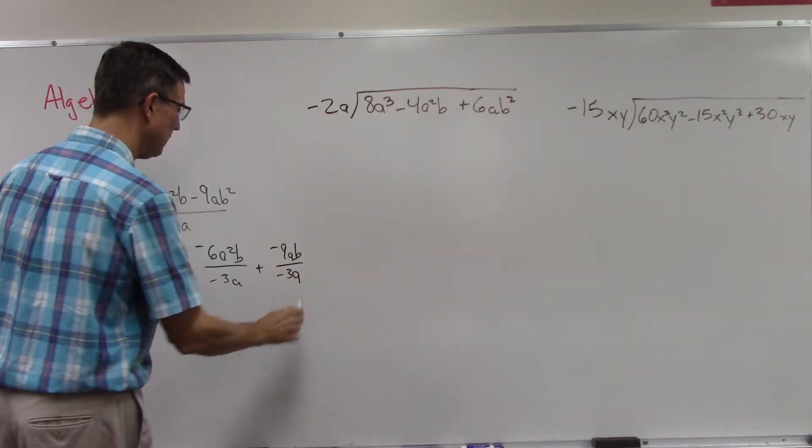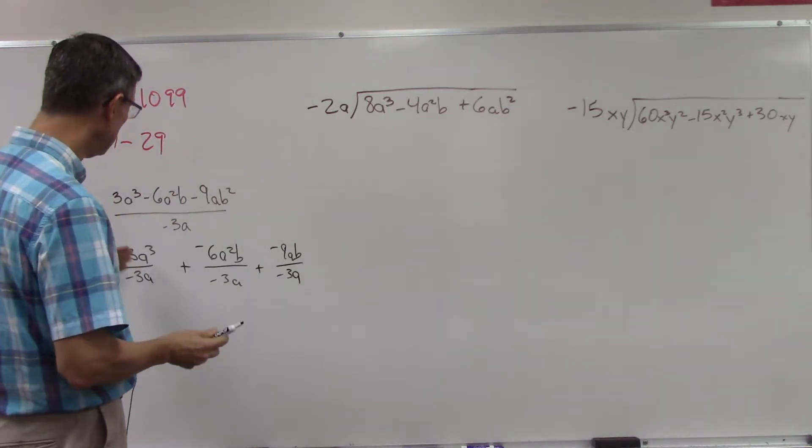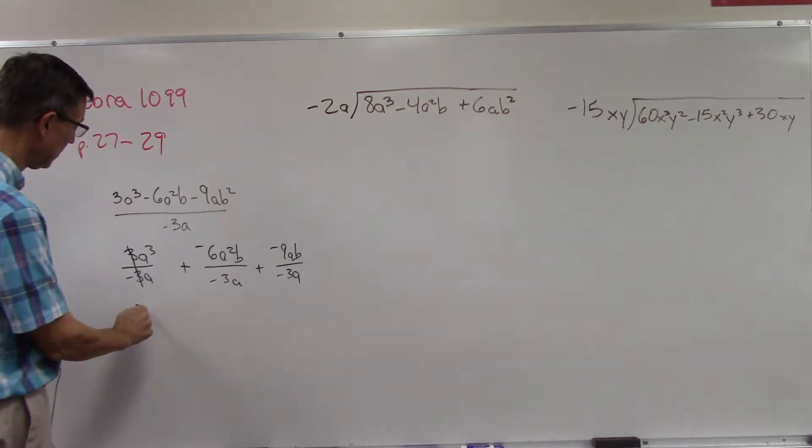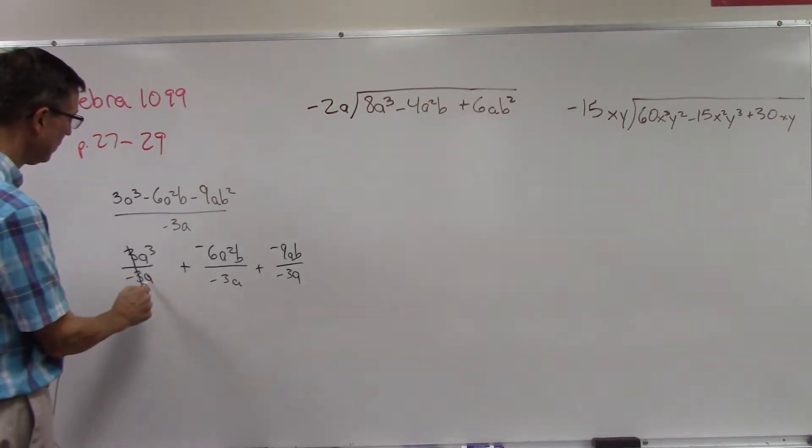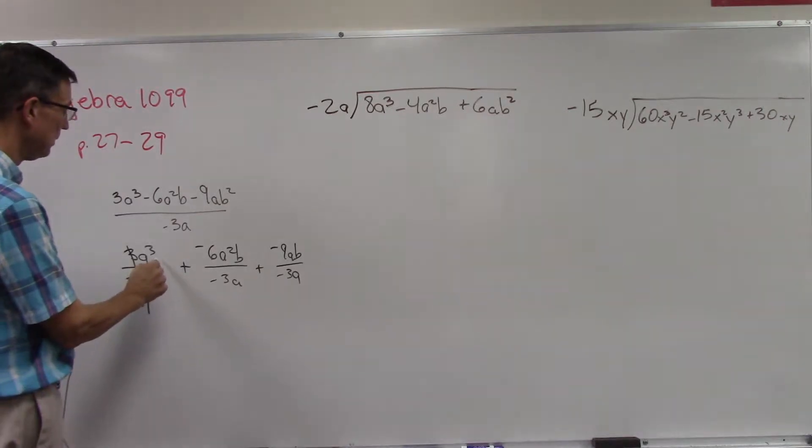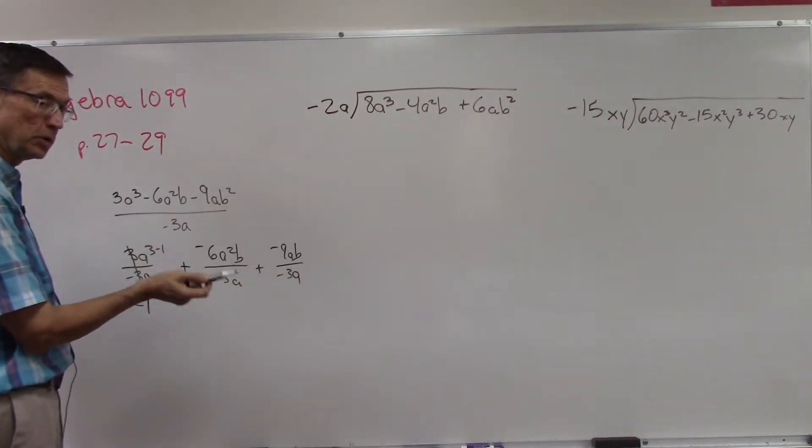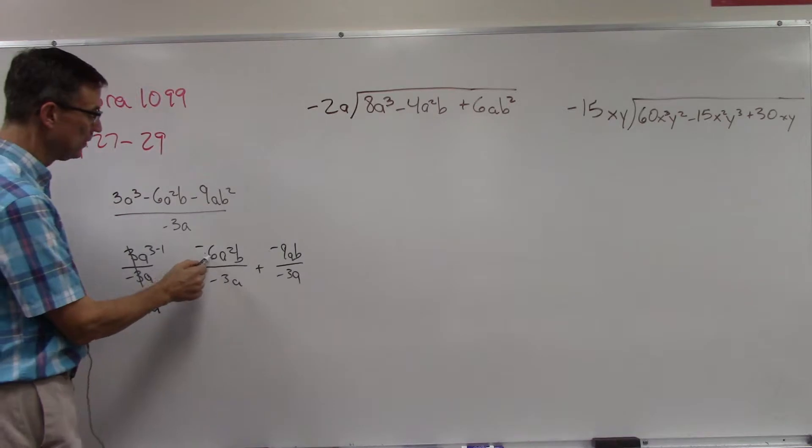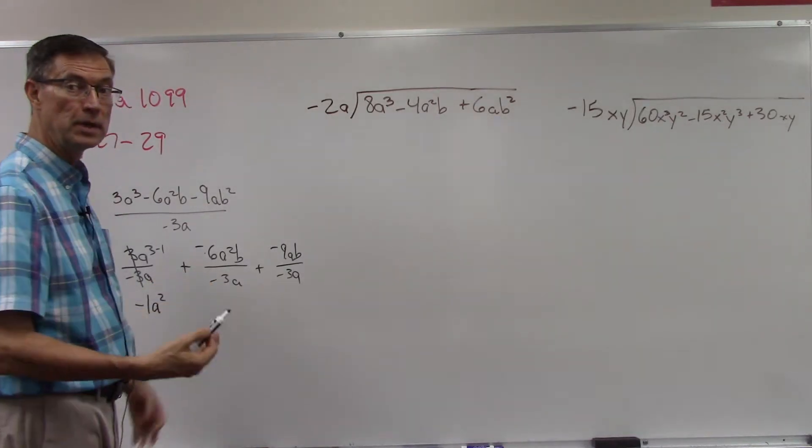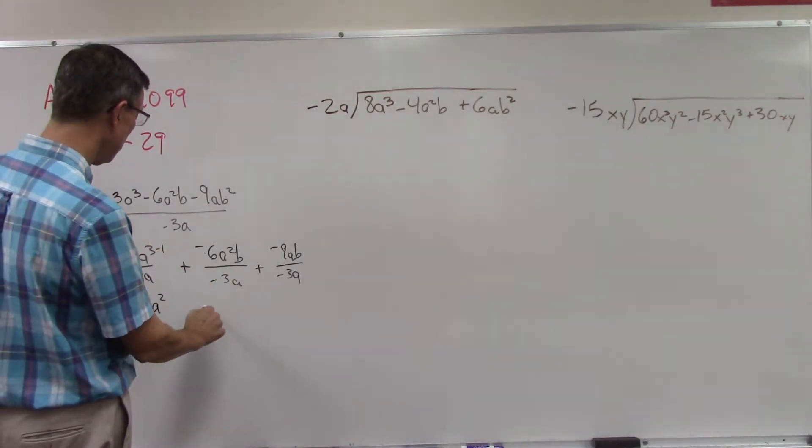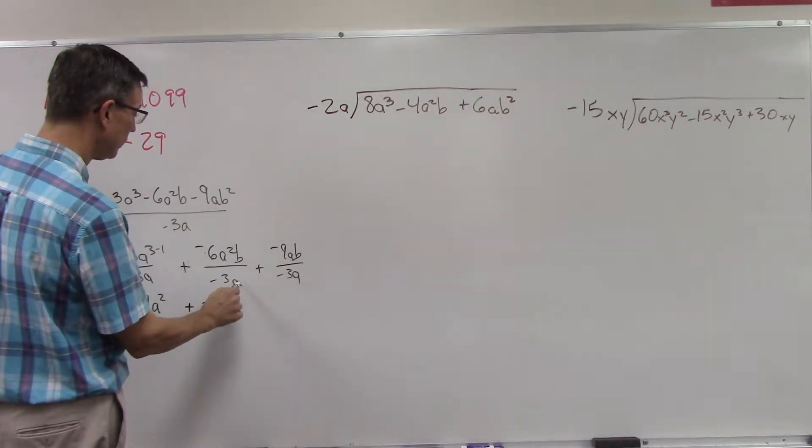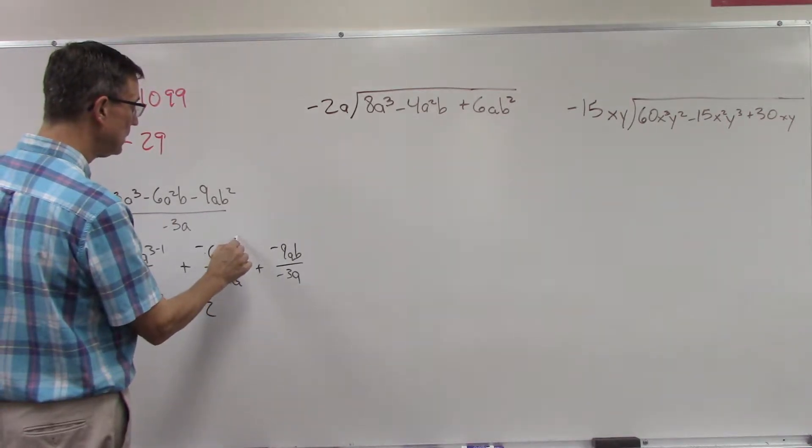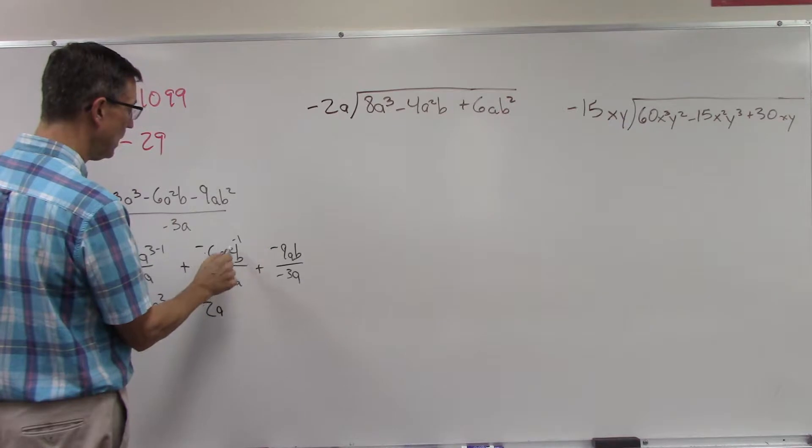Now I can simplify each of these. So 3 over 3 is going to cancel out and I'm going to get negative 1, and then I bring this a up, right, and it becomes negative a to the negative 1, negative 1, so I can subtract and get a squared. What's negative 6 divided by negative 3? Negative divided by negative is a positive, 6 divided by 3 we get 2.